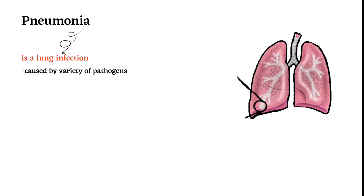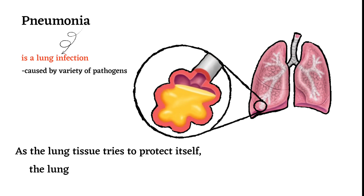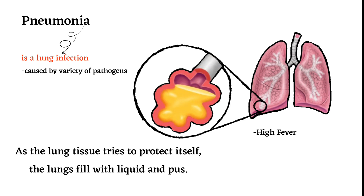Fifth, pneumonia: pneumonia is a lung infection caused by a variety of pathogens. As the lung tissue tries to protect itself, the lungs fill with liquid and pus. In addition to hemoptysis, other symptoms include a high fever, cough, and chest pain.